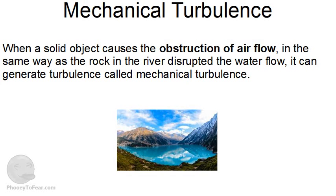When a solid object causes the obstruction of airflow — in the same way as the rock in the river disrupted the water flow — it can generate turbulence called mechanical turbulence. Usually this kind of turbulence is created by objects such as mountain ranges and tall buildings. Normally pilots and route planners will be well aware of such potential turbulence and route the planes around the object. As mountains and tall buildings don't move, it's not a problem to go around them.